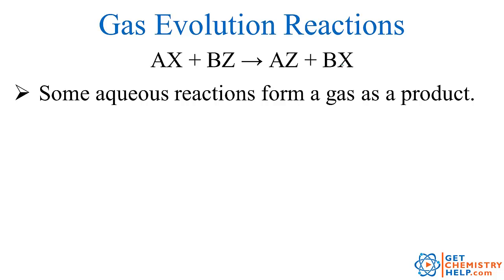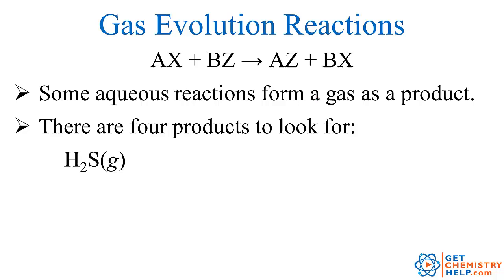Well sometimes one of these products can also be a gas. Well there are only really four types of products you need to worry about in terms of forming a gas. The first product to look out for is H2S. So if one of your two products that's formed is H2S, it won't be aqueous or solid, it'll actually be a gas.